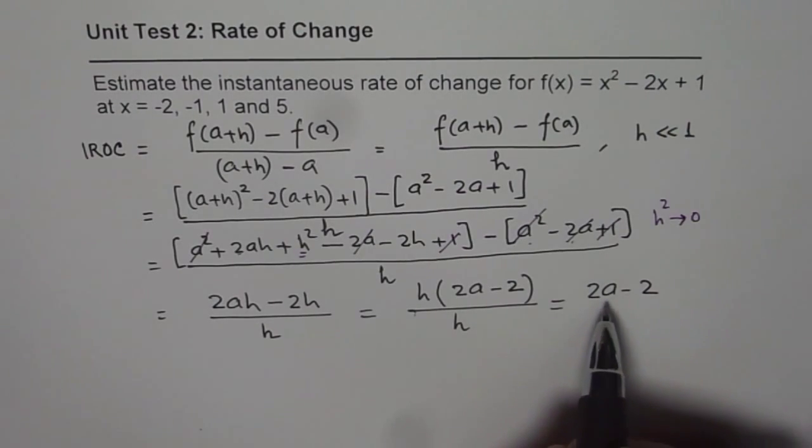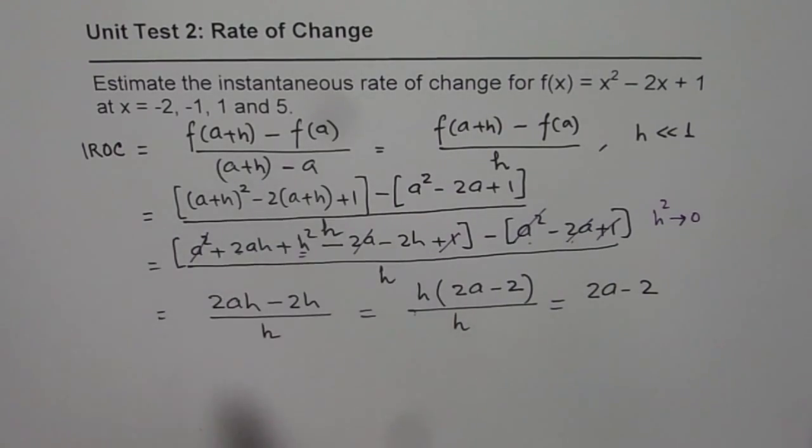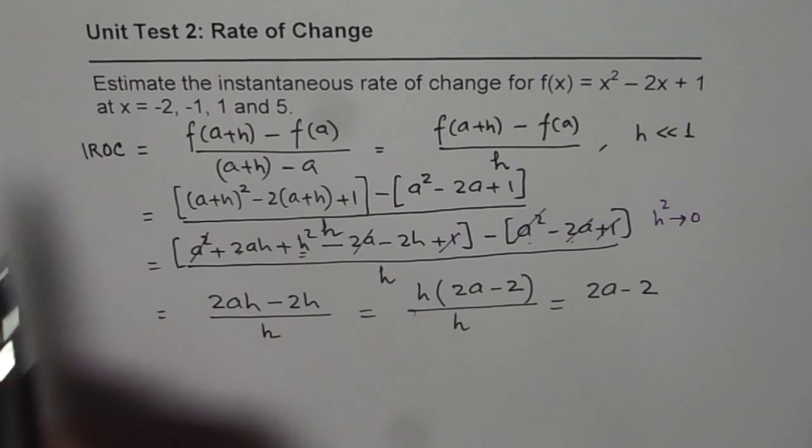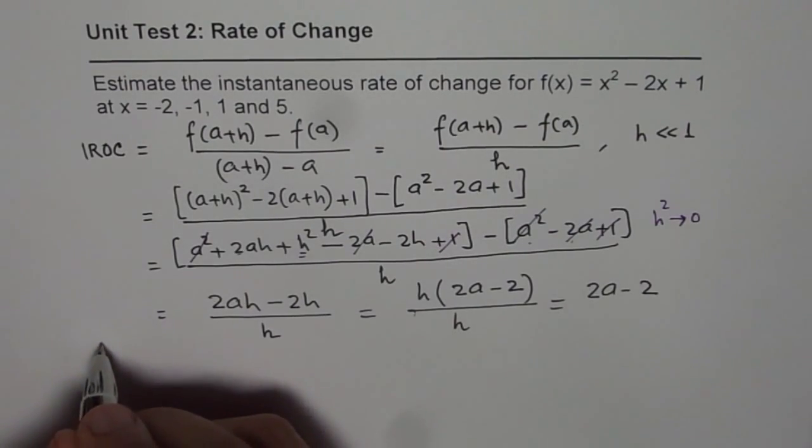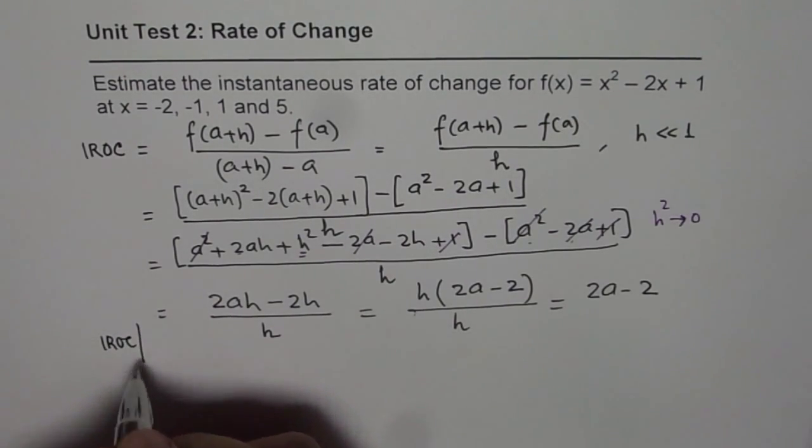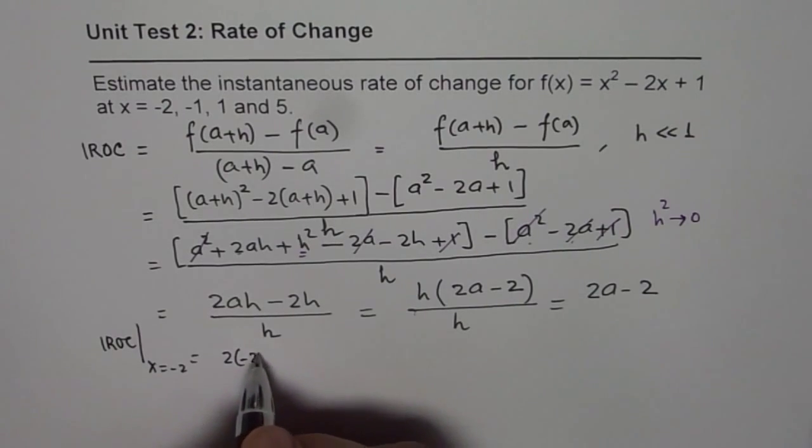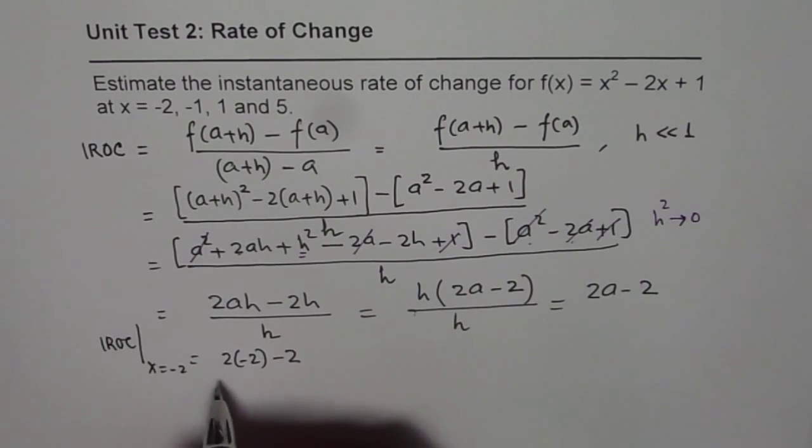This becomes instantaneous rate of change. Now we have to find different points. At x equals minus 2, instantaneous rate of change will be 2 times minus 2 minus 2, which equals minus 6.